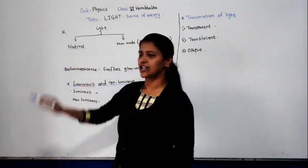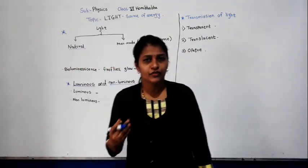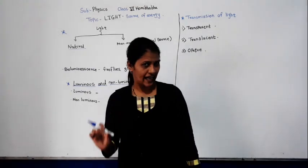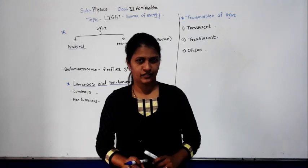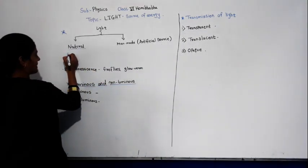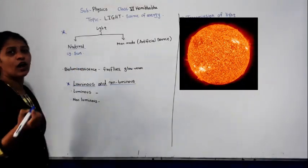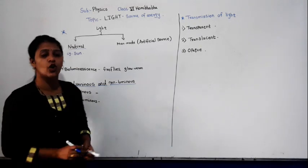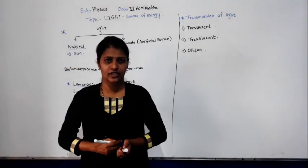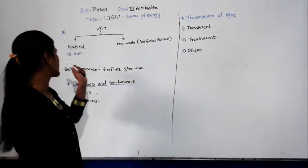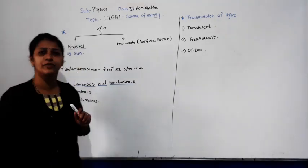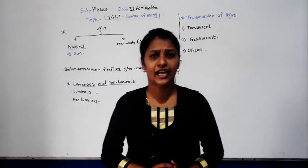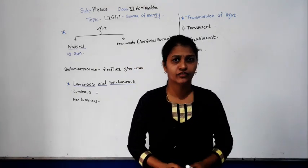First, natural. What is meant by natural? The light which we get from nature is called a natural source of light. For example, the sun. The sun is a natural source of light, and it is also called the prime source of energy. The light which we get from the sun is natural — it is called a natural source of energy.